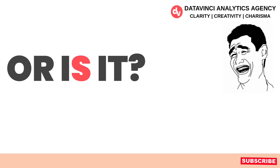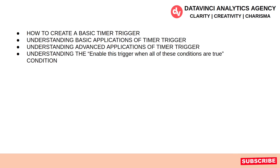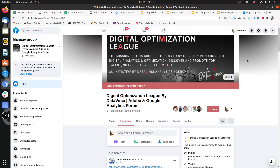So what are we going to cover? We are going to cover how to create a basic timer trigger in Google Tag Manager, understand the basic applications of timer trigger, understand advanced applications of timer trigger, and understand the condition of 'Enable this trigger when all these conditions are true.'